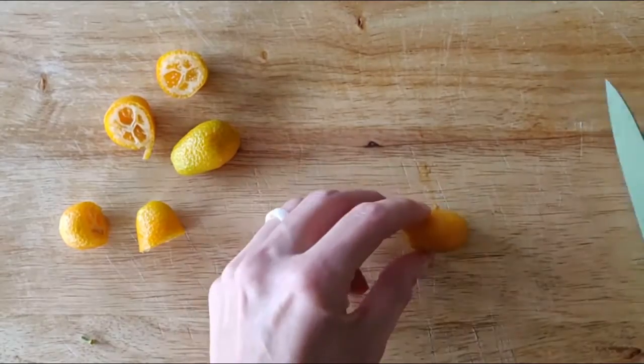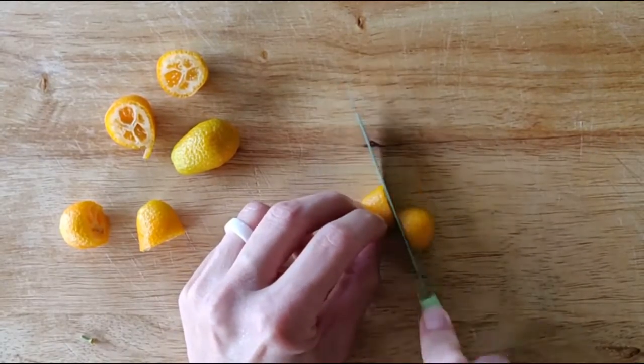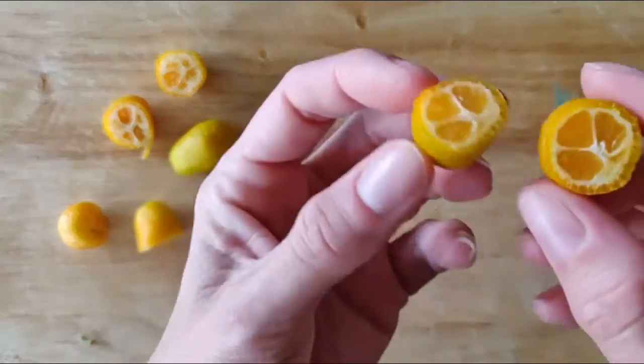Just give them a little roll and press down a bit to encourage the sweetness in the skin to blend with the sour juices inside.